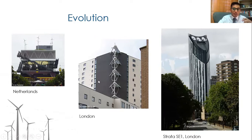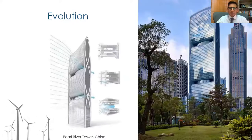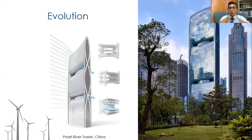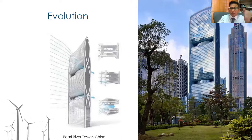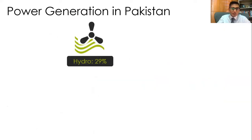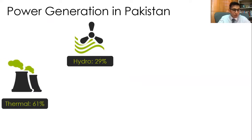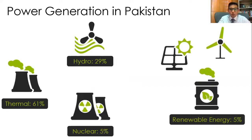The advantage of a vertical axis wind turbine is that you don't need wind in only one direction - wind from any direction will work. Building-augmented wind turbines are designed so that the building itself accelerates wind in the areas where the turbines are located. We already have this in China. It's not going to be an eyesore, and it can contribute to around 30% of the building's electrical consumption. For Pakistan's current energy mix: hydropower contributes 29%, thermal 61%, nuclear 5%, and renewable energy from wind and biomass around 5%.